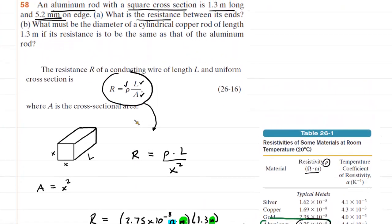We go back and look at part B now. It wants the diameter of a cylindrical copper rod with a length of 1.3 meters. And importantly, the resistance will be the same as that of the aluminum.